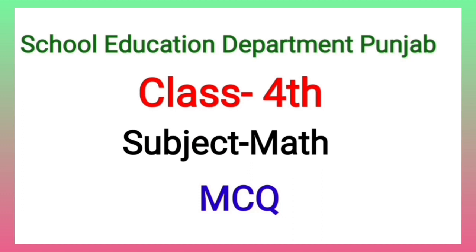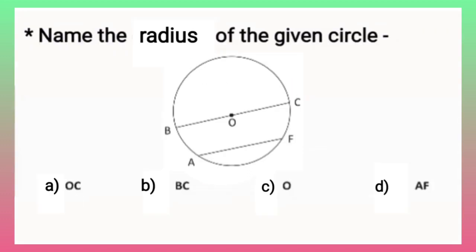So children, let's start. Children, the first question is name the radius of the given circle. Children, we have already learned that radius is a line segment that joins the center of a circle with its surface. So children, now we have to name the radius of the given circle.